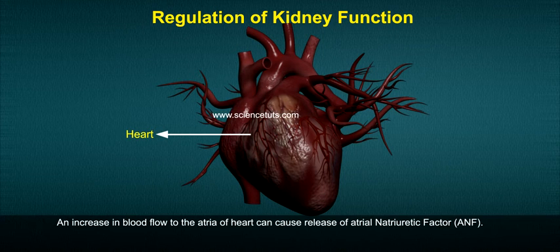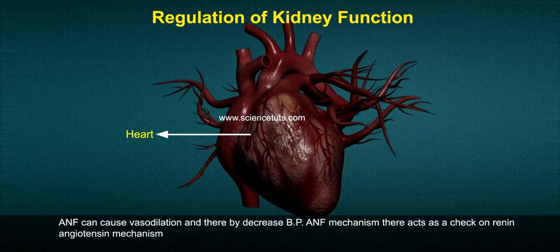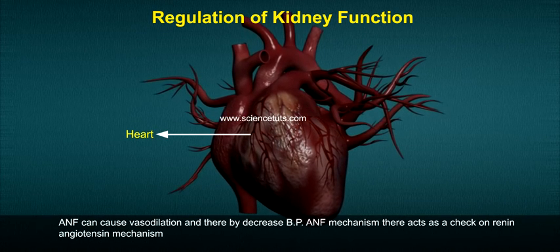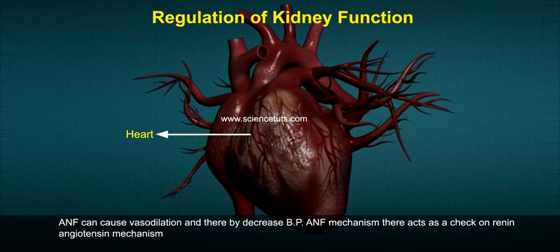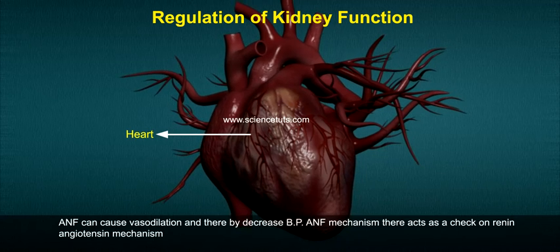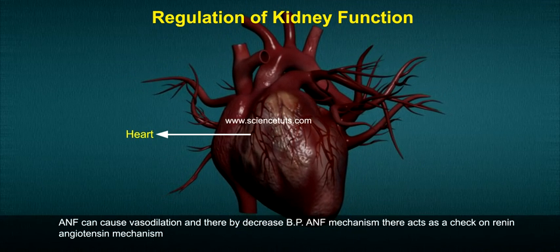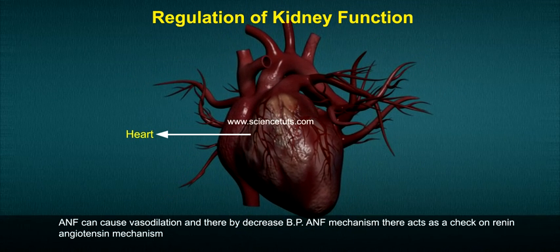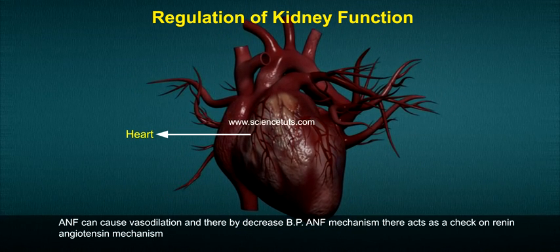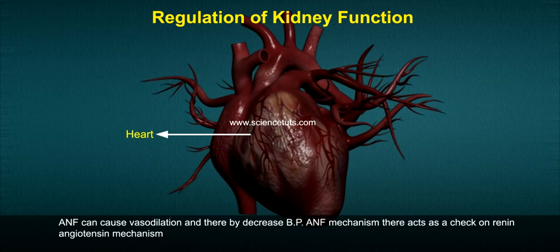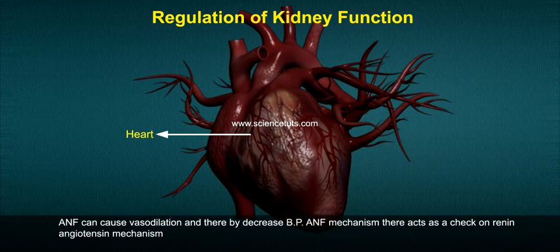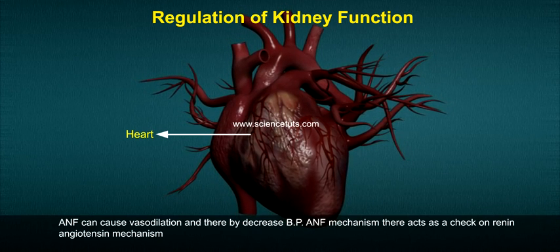An increase in blood flow to the atria of the heart can cause release of atrial natriuretic factor, ANF. ANF can cause vasodilation and thereby decrease blood pressure. The ANF mechanism thus acts as a check on the renin-angiotensin mechanism.